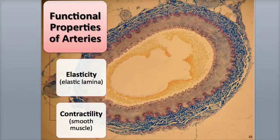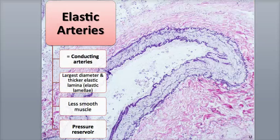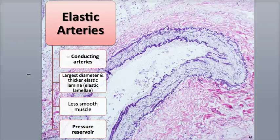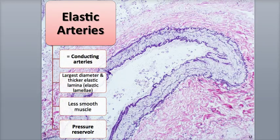Arteries are also different in structure based upon their major functions. There are two main types: elastic arteries and muscular arteries. Elastic arteries have the largest diameter in the body, but have thin walls relative to overall size — ranging from as thick as a garden hose to as thick as a finger. They have well-developed internal and external elastic lamina and a thick tunica media with an abundance of elastic fibers called the elastic lamellae.